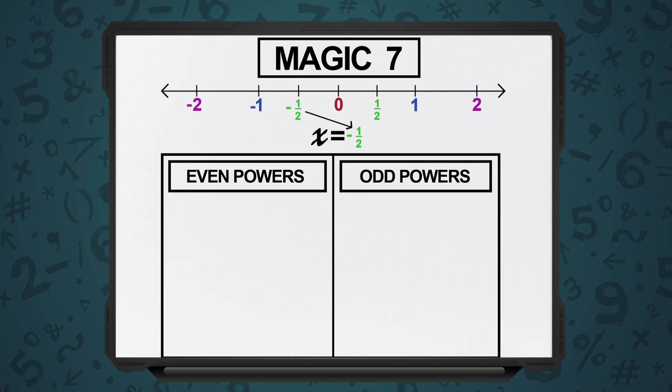Let's continue our discussion about the magic 7 numbers. This time, the example we'll take is x is equal to minus half. Whenever we have negative numbers, we'll have two sets of classification: even powers and odd powers.